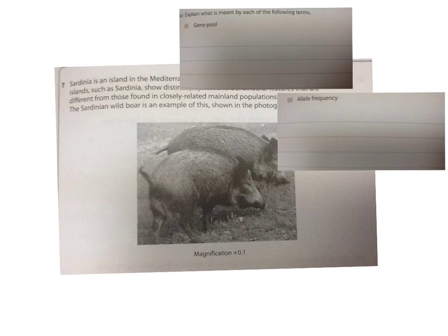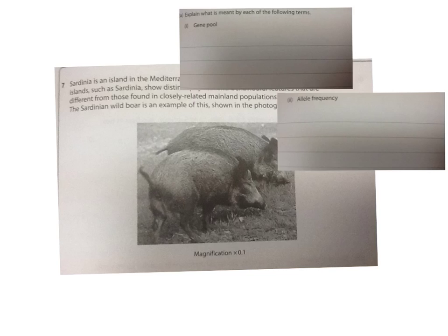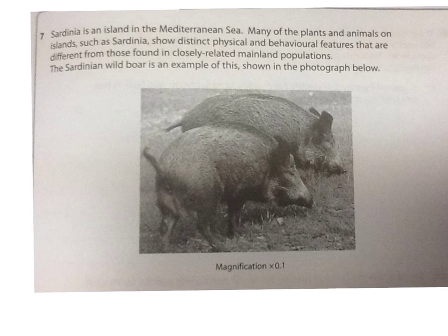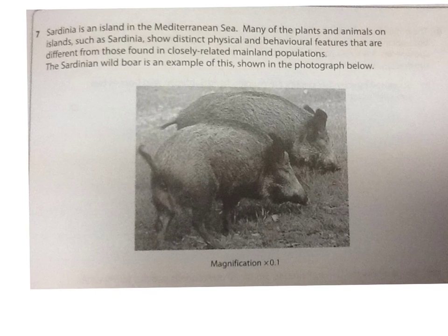I'll shift this one to the front so I can show you the question, and Ryan's going to read the question out. Sardinia is an island in the Mediterranean Sea. Many of the plants and animals on islands such as Sardinia show distinct physical and behavioral features that are different from those found in closely related mainland populations. The Sardinian wild boar is an example of this, shown in the photograph.